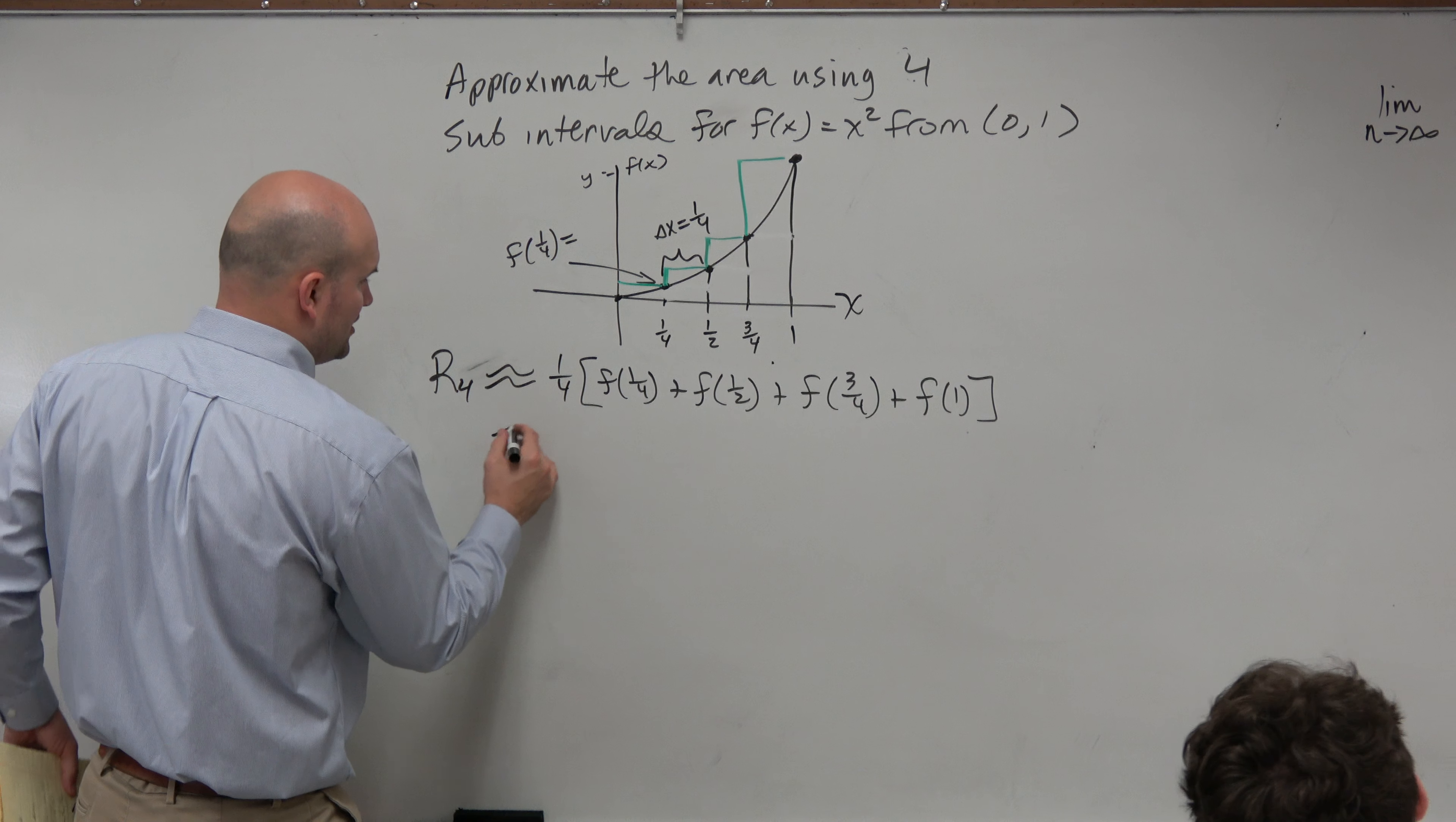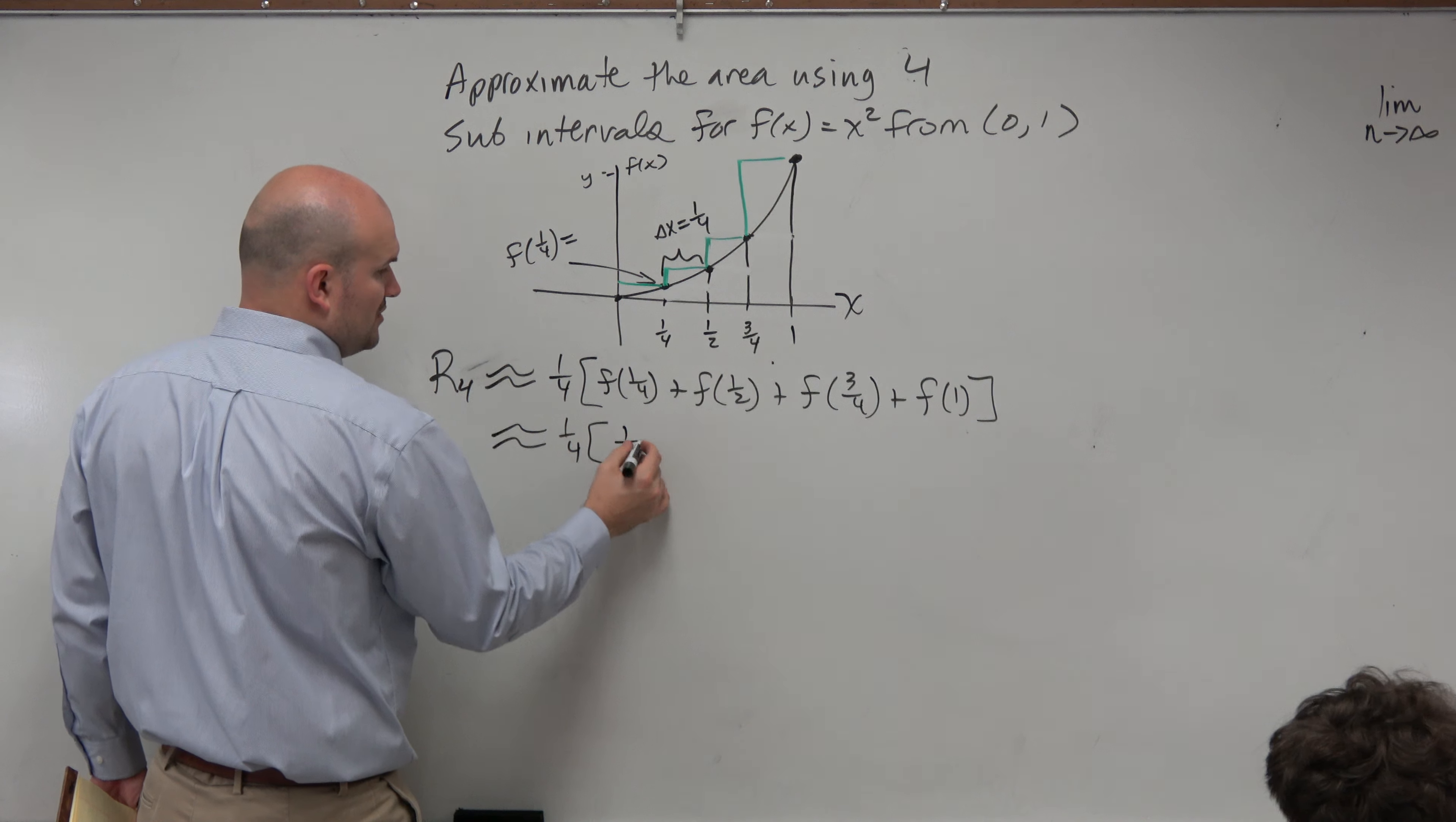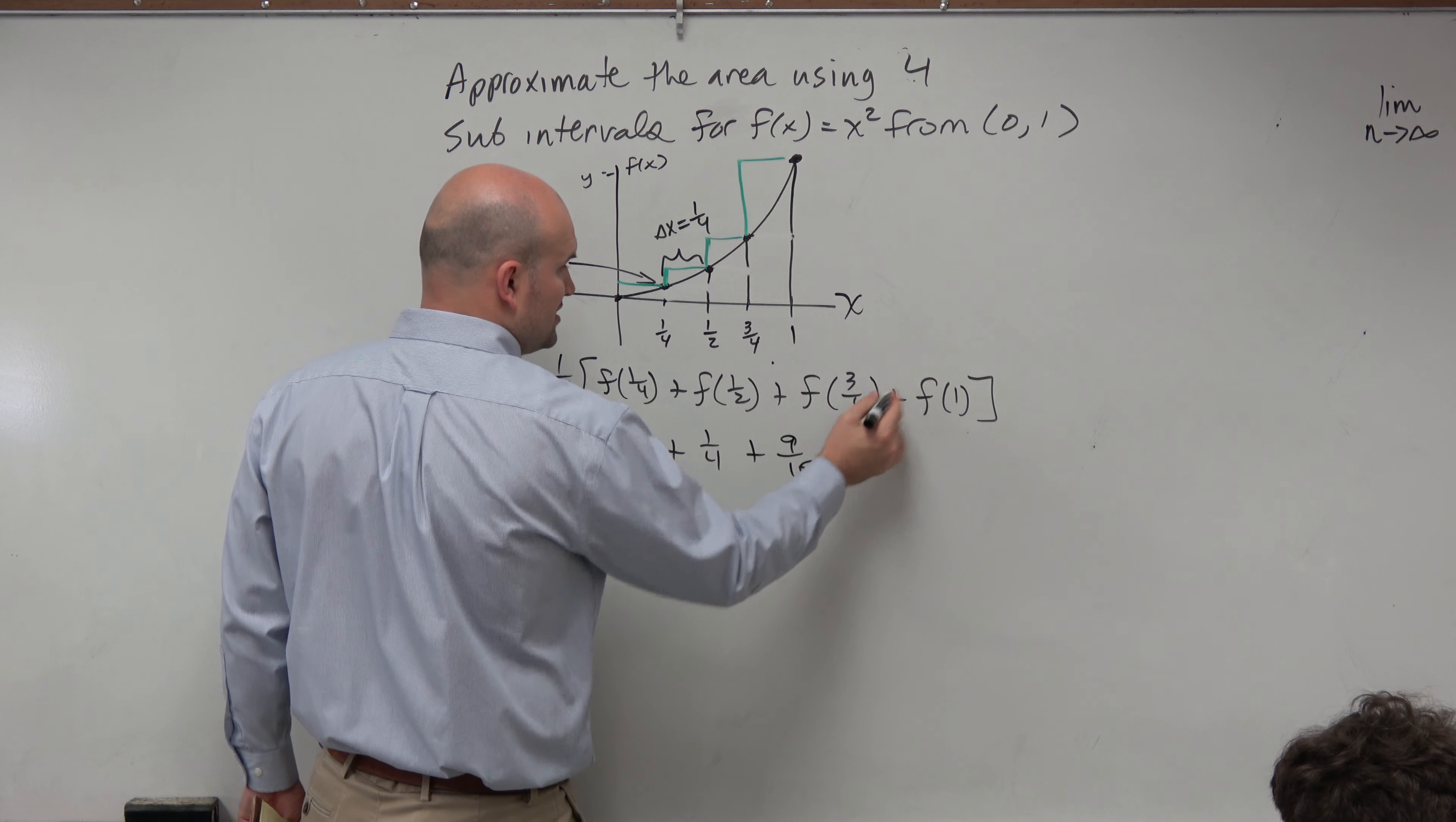Now, I'm just doing this as an extra step, but we could also approximate this as 1/4th times f of 1/4th, which is 1/4th squared, which is 1/16th, 1/2 which would be 1/4th, 3/4ths which is 9/16ths, and then plus 1.